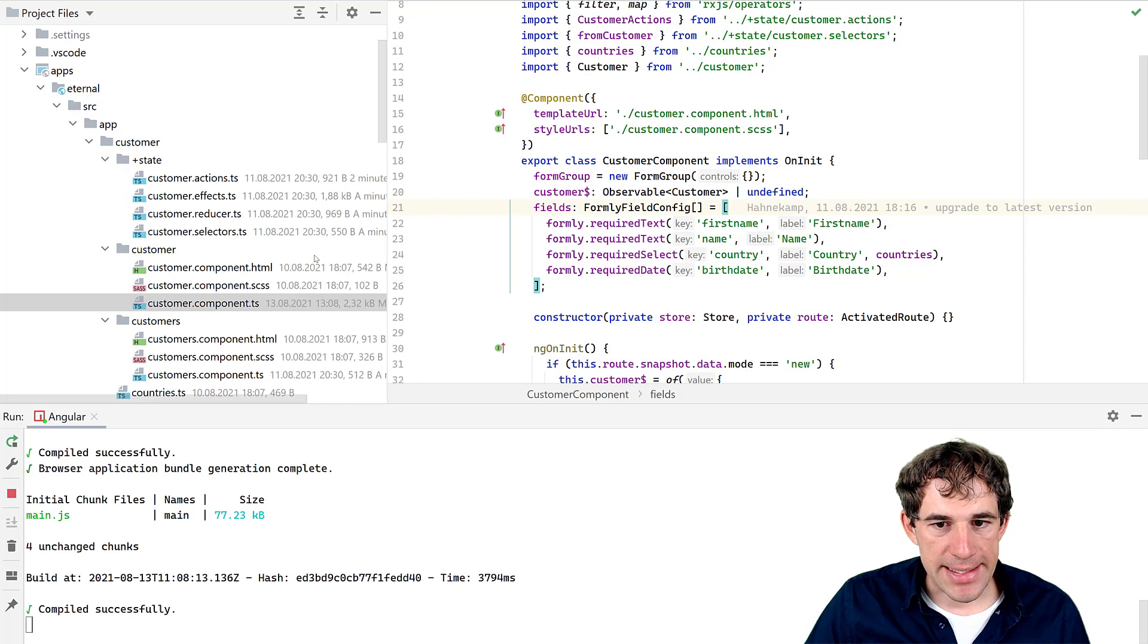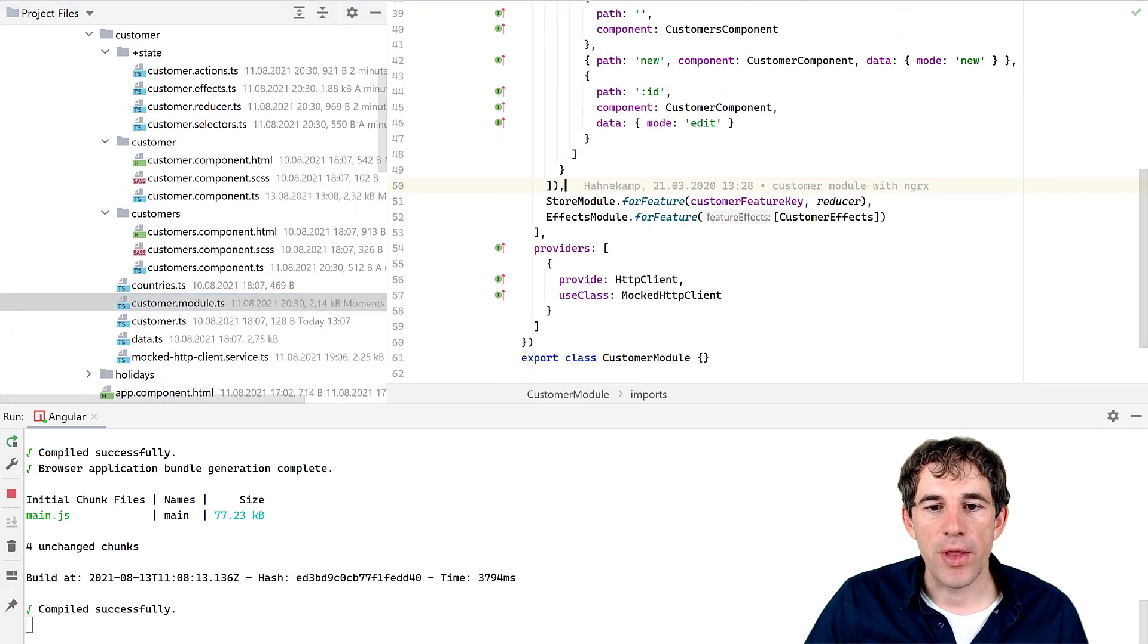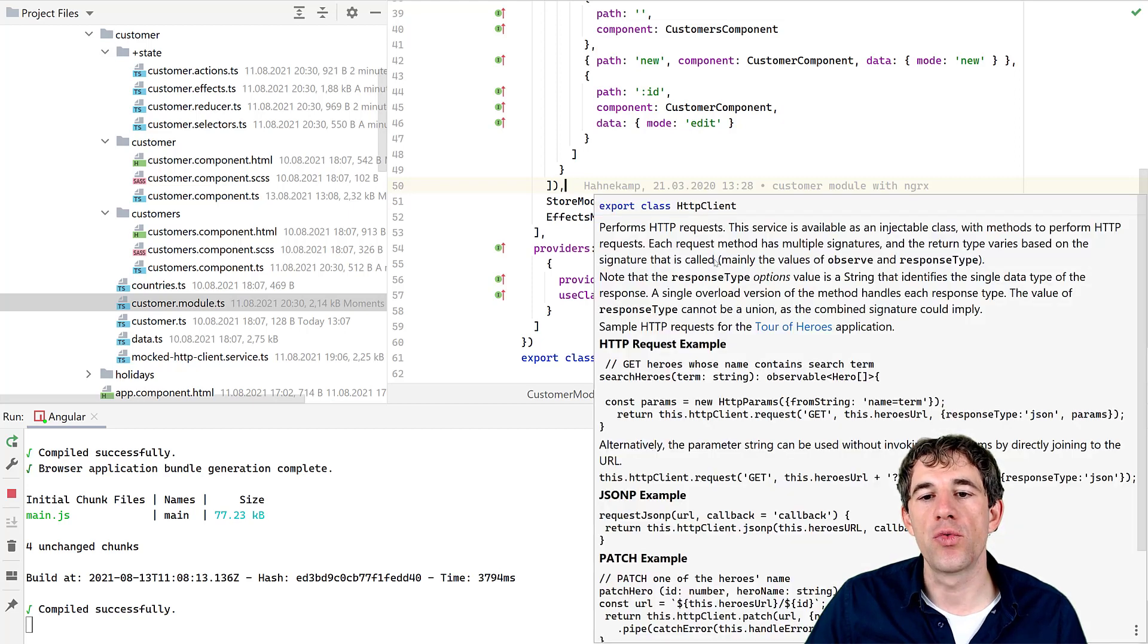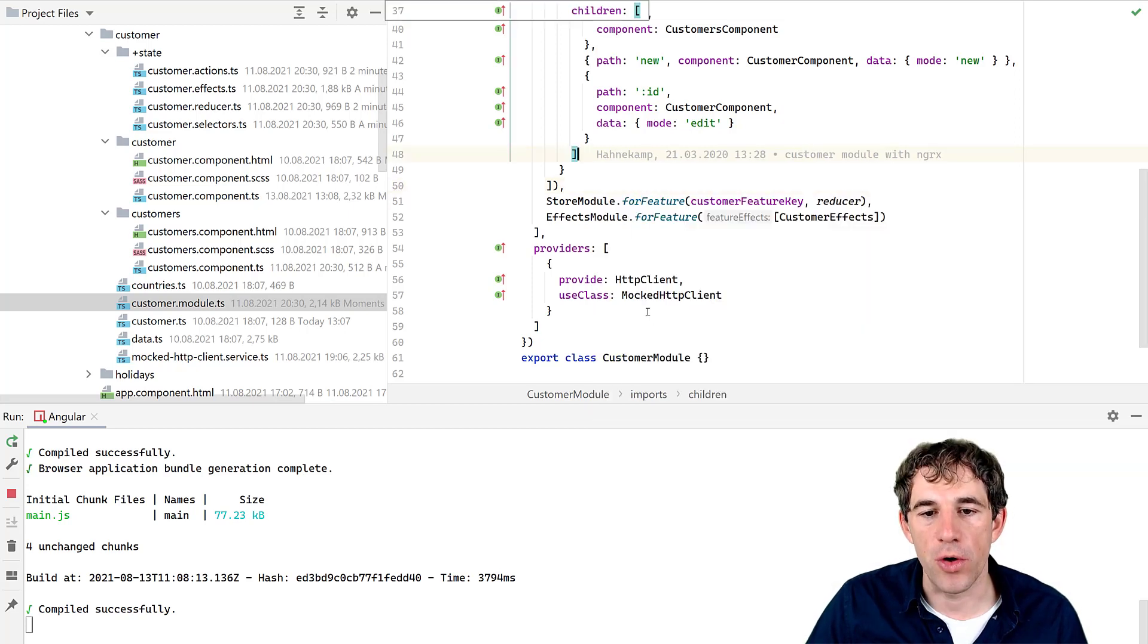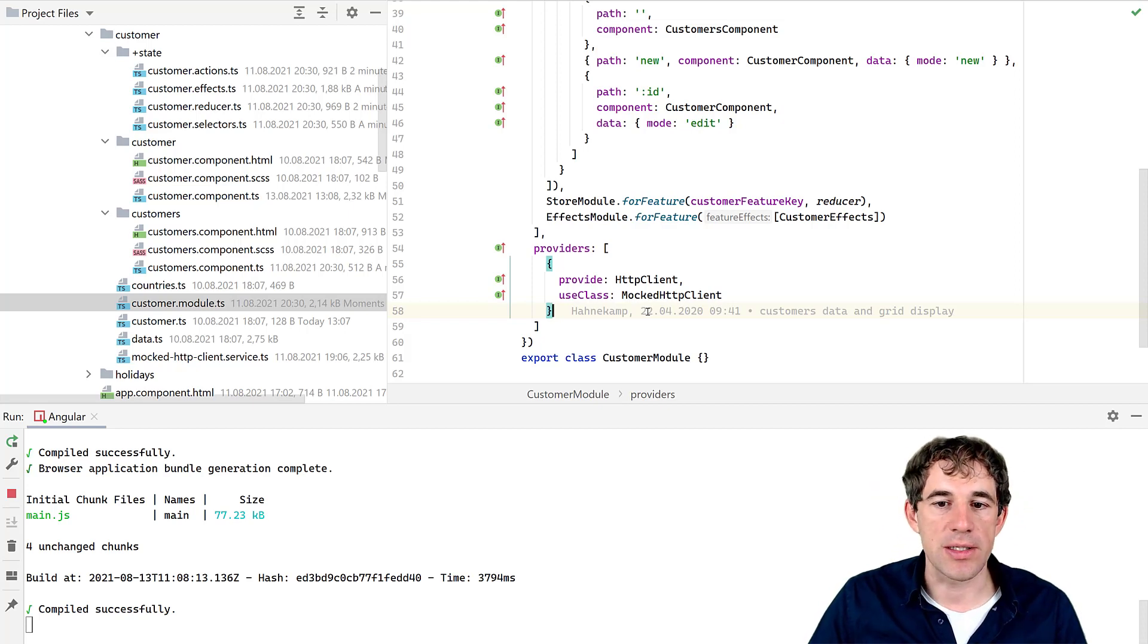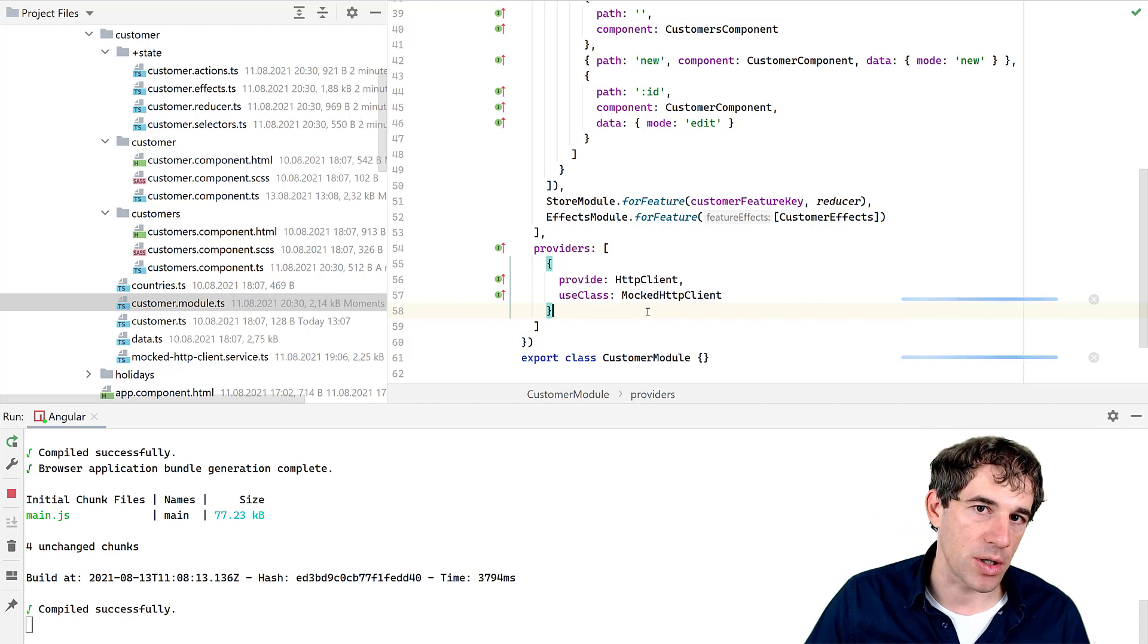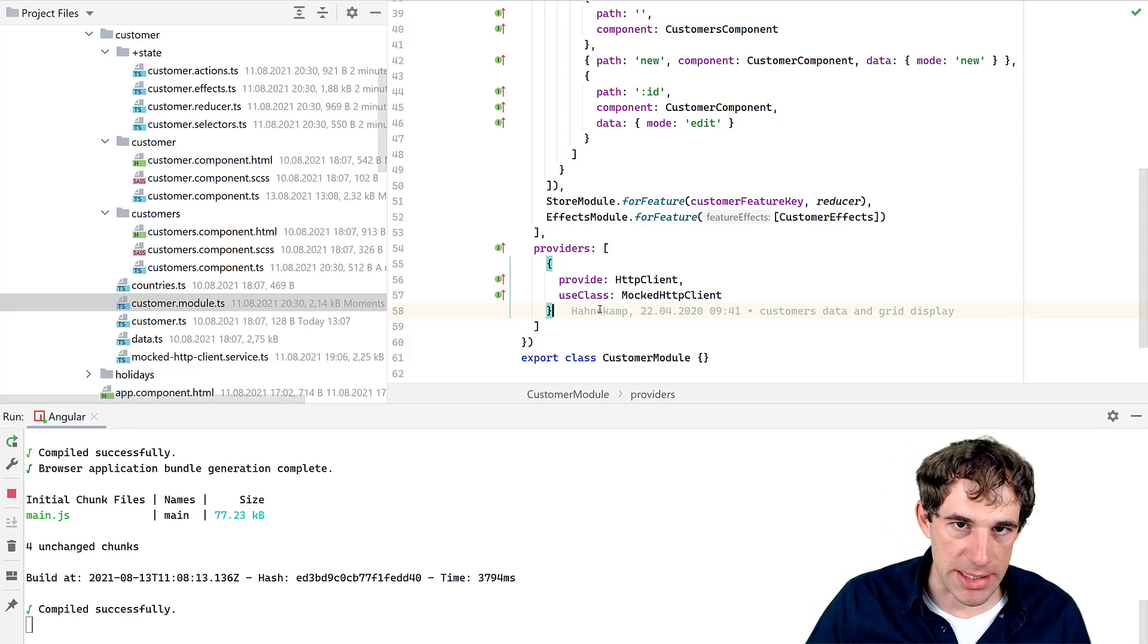So that's it more or less. One final thing, one last thing. The HTTP client is here overwritten with a mocked version. And this means that our effect can just use the HTTP client as normally. They can just send requests. But since there is a mocked HTTP client in place, it will intercept these requests and not send it to a real backend, but return some mocked data. So the big advantage here is that you don't require a backend. The frontend application is just enough.